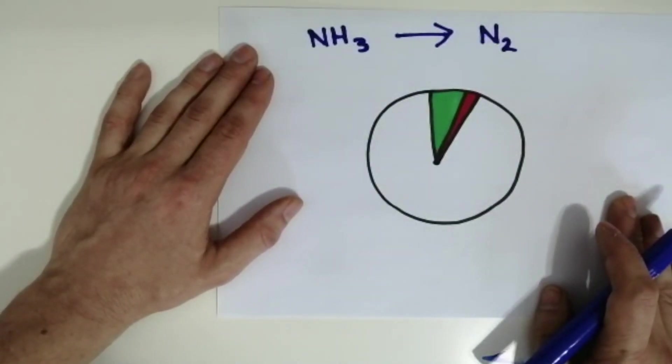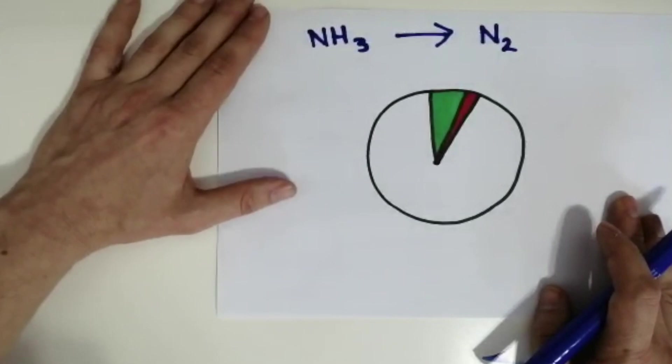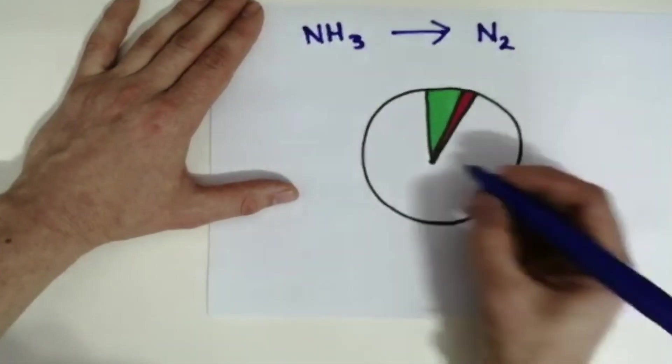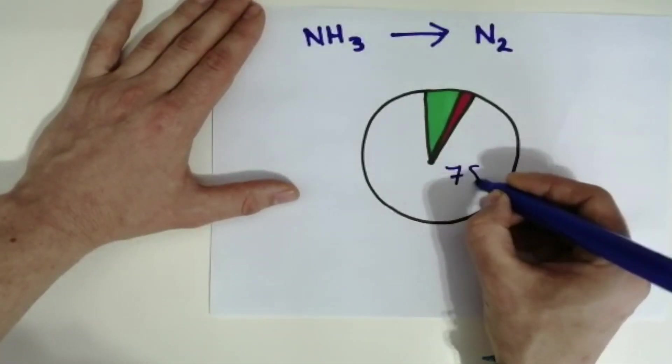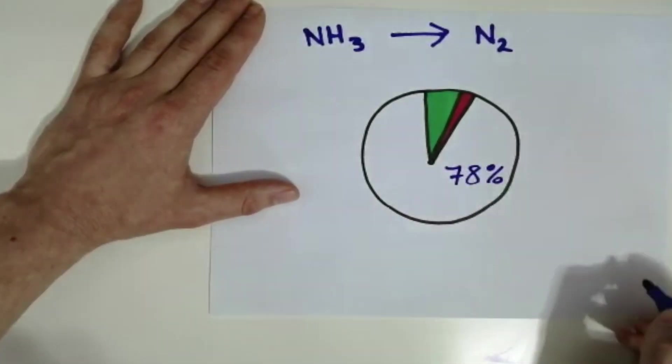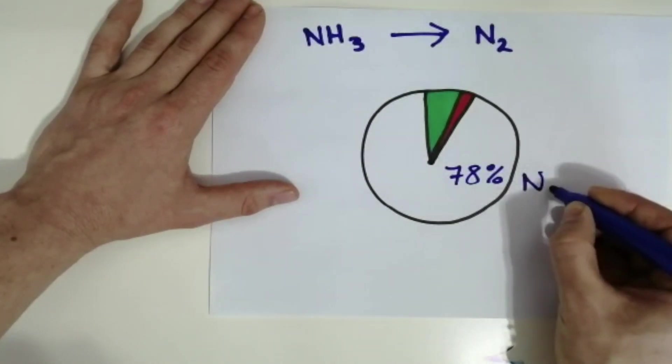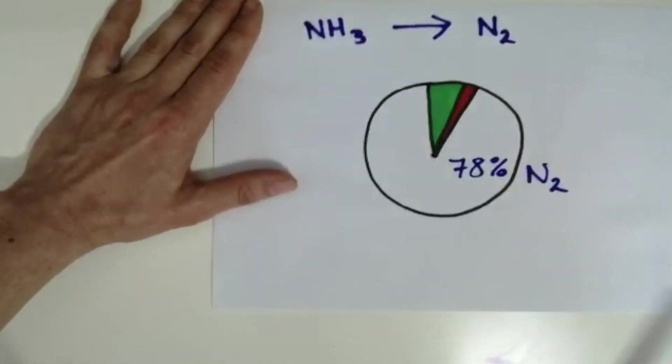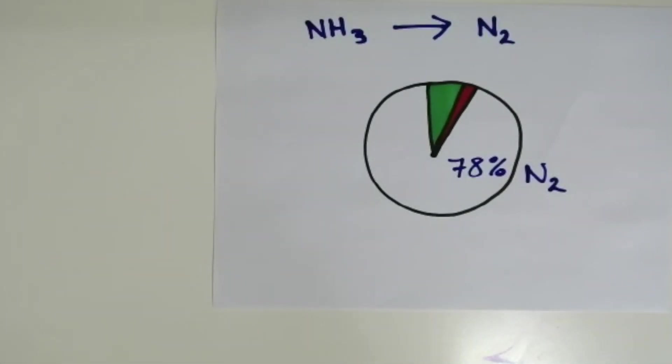You don't need to know the exact percentages of gases that the Earth started off with, but we do need to know the exact percentages of gases in the atmosphere today. So we need to know that the largest gas in our atmosphere is nitrogen, which makes up 78 percent.